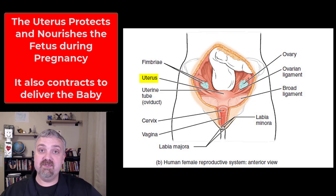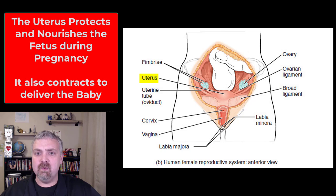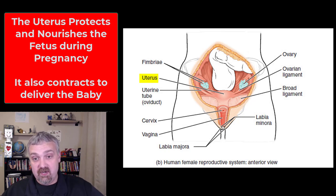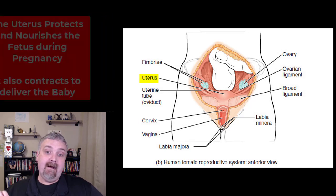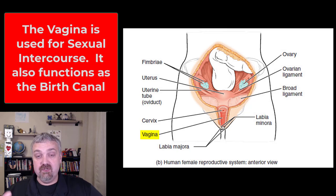Then we have the uterus. The most interesting fact about the uterus is that it can stretch to 500 times its pre-pregnancy size, going from weighing a few ounces to two pounds. It grows huge — it's very elastic as the baby gets larger and larger — and then it contracts to deliver the baby. Then we have the cervix, which is the portion of the uterus that projects into the vagina. The vagina is used for sexual intercourse but also delivery of the baby.